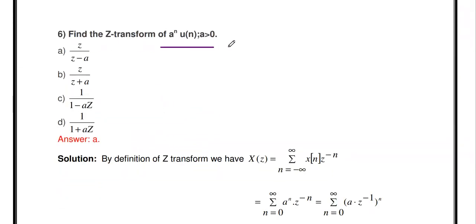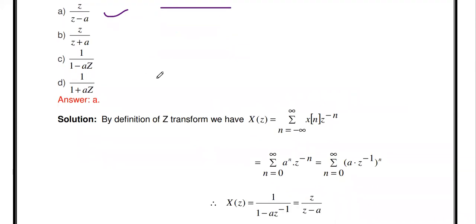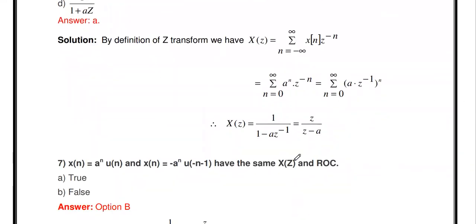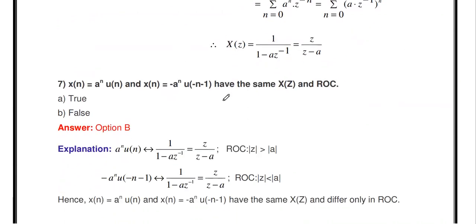Find the Z-transform of x[n] = aⁿu[n], where a > 0. This is an exponentially decaying signal. The Z-transform of aⁿu[n] is z/(z-a). The solution is available in the lecture videos.